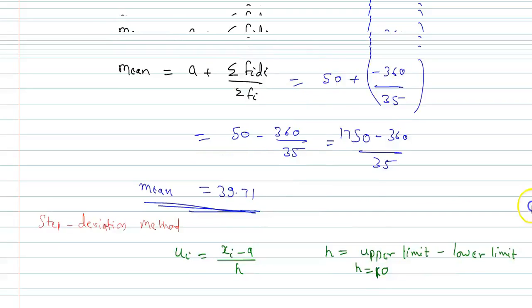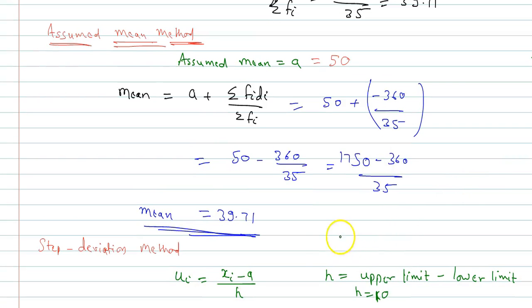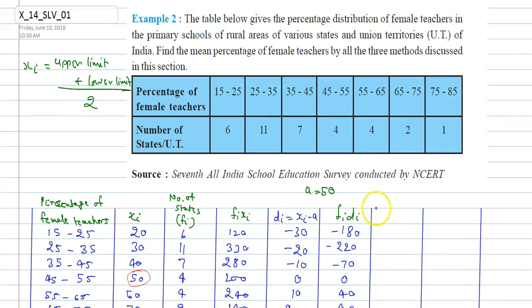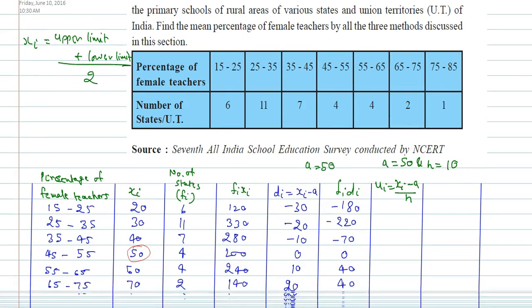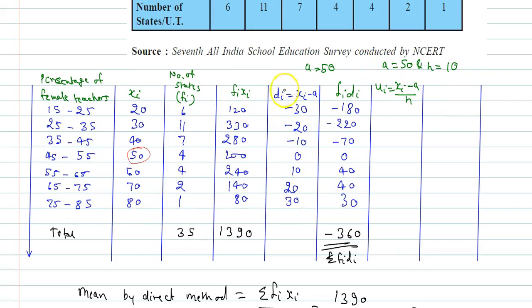With assumed mean a = 50 and h = 10, we calculate Ui = (Xi − a)/h for each Xi. The deviations (Xi − a) are the same as before, so: (−30)/10 = −3, (−20)/10 = −2, (−10)/10 = −1, 0/10 = 0, 10/10 = 1, 20/10 = 2, 30/10 = 3.